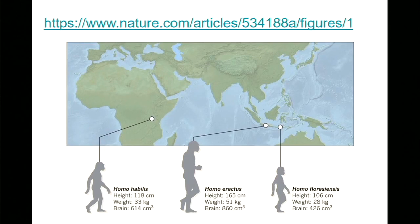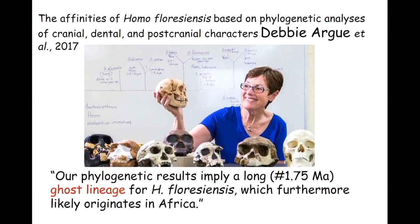And relatively quickly, once you get out of Africa, things seem to happen and give rise to Homo floresiensis, among others perhaps. This is an interesting hypothesis — a sort of really old origin. The person who, with her colleagues, has done the recent elegant work looking at 133 traits in a whole load of fossils is Debbie Argue, who's in the room. She found that her phylogenetic results imply a long — 1.75 million year — ghost lineage for Homo floresiensis, which furthermore likely originates in Africa. That is an amazing hypothesis, and it could prove to be true.